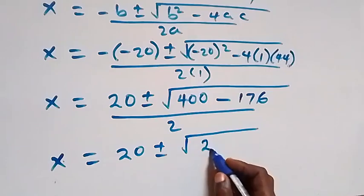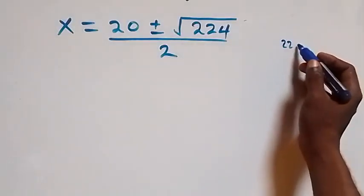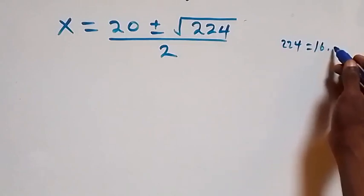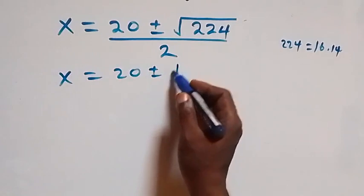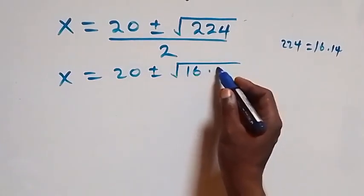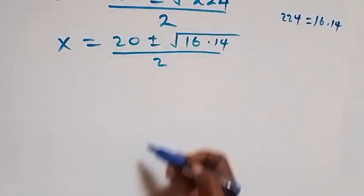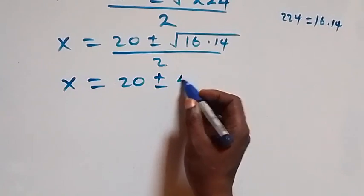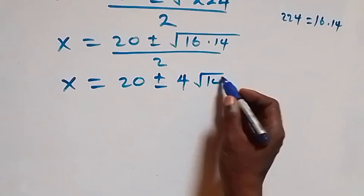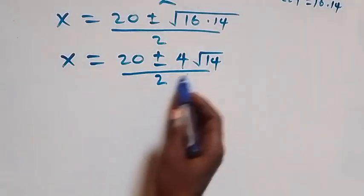This becomes x equals to 20 plus or minus square root of 224, over 2. Now 224 can be written as 16 times 14. So we have x equals to 20 plus or minus square root of 16 times 14, over 2. We can separate 16 out, giving us 20 plus or minus root 16, that's 4, times root 14, over 2.